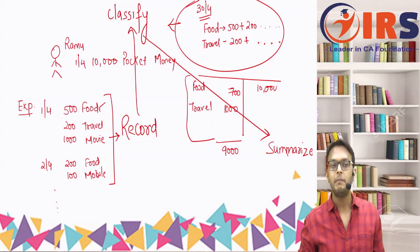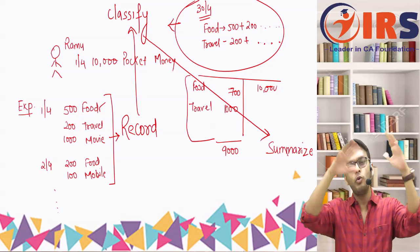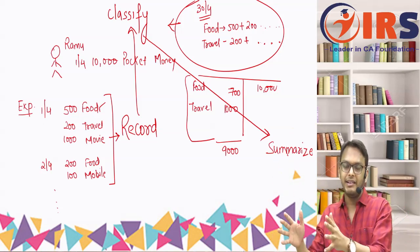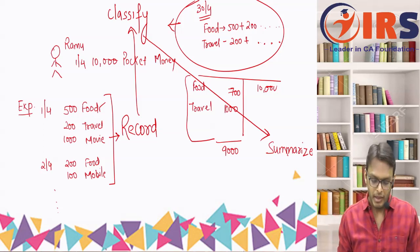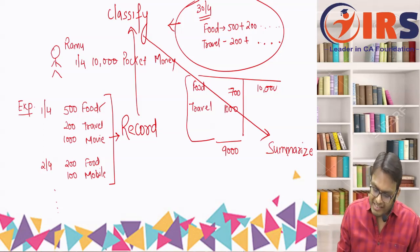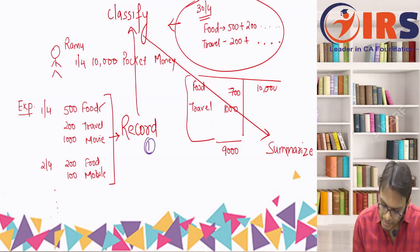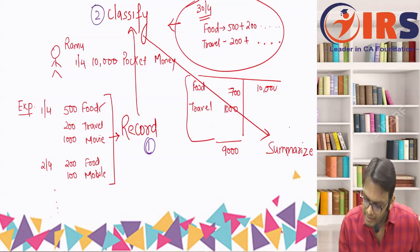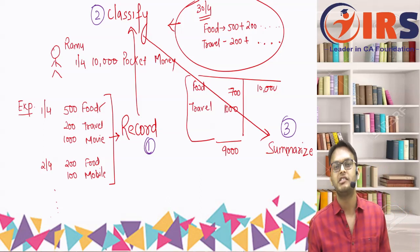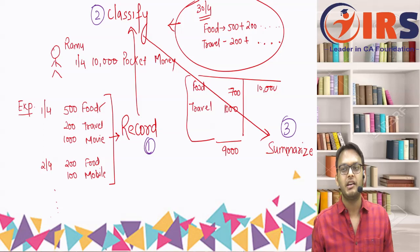Summarizing means creating an overall statement — putting all records at one place and making a monthly summary: received 10,000, expenses 9,000, that is the summary. So the first step is record, the second step is classify, and the third step is summarize. Similarly, accounting works the same way.